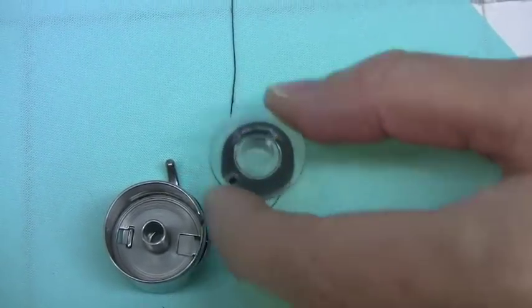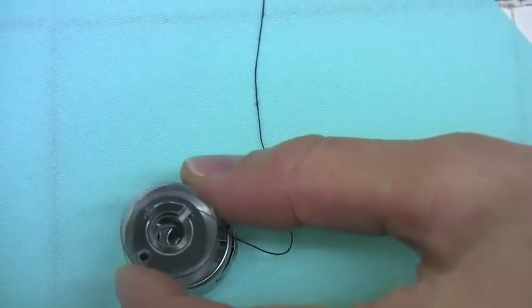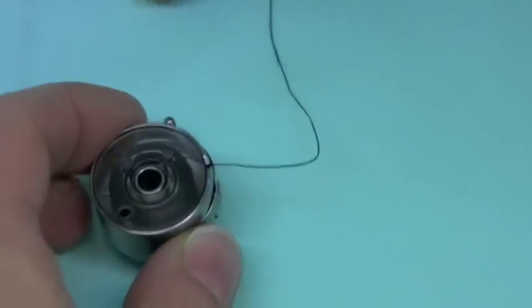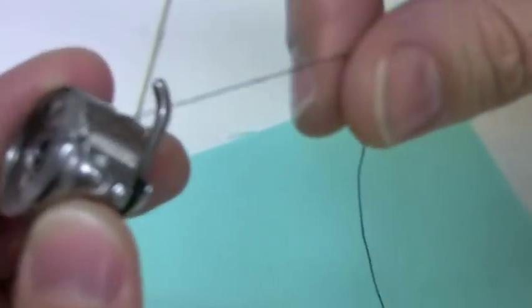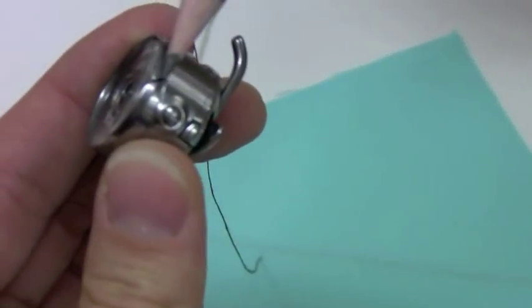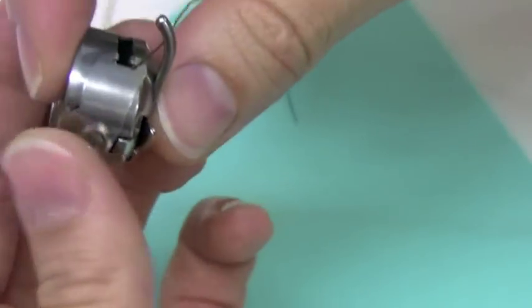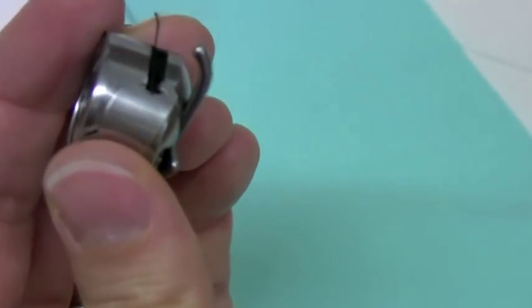Then you pick your bobbin up and you drop it right in like that, and then you want to make sure that you have the thread coming right through this slot. If you gently turn, you'll be able to have it click.